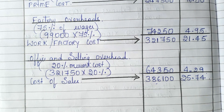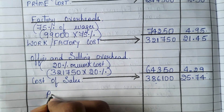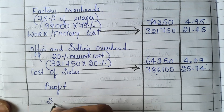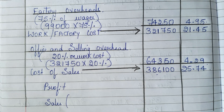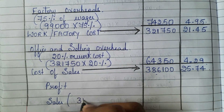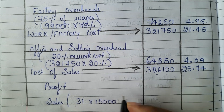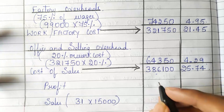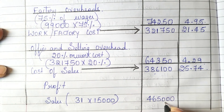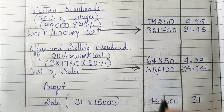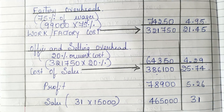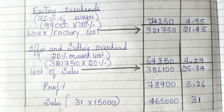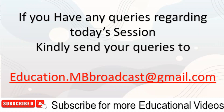Now for profit: we need to know the value of sales. In the question, the selling price was reduced to 31 rupees per unit as on 1-1-2023. So 31 rupees into 15,000 units is 4,65,000, which is 31 per unit. Subtract 3,86,100 from 4,65,000 to get a profit of 78,900, which is 5.26 rupees per unit. Hope you have understood this video. The notes for this are in the first comment — kindly download and study well. For any queries, send an email to education.mbbroadcast@gmail.com.